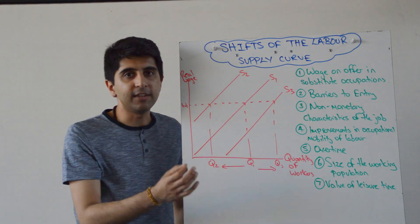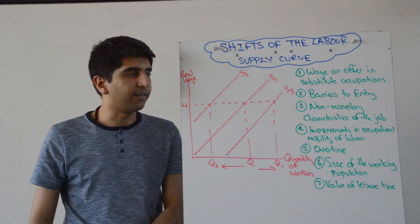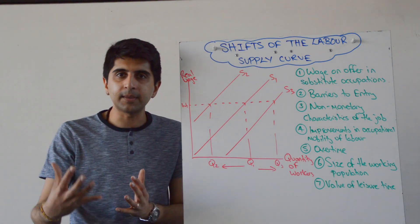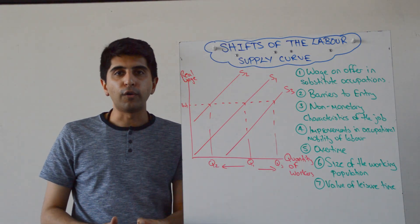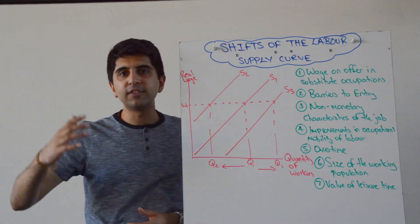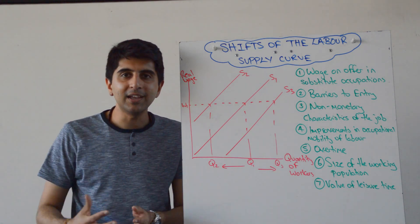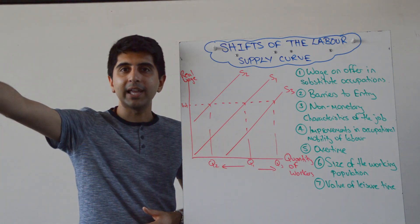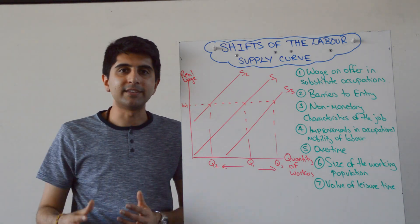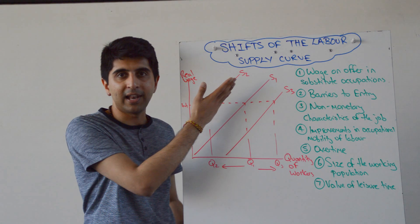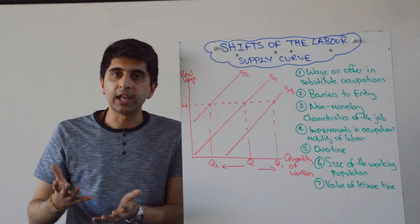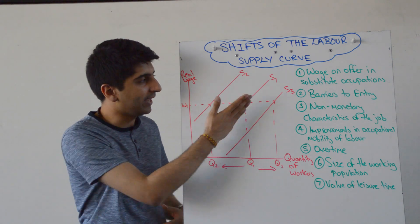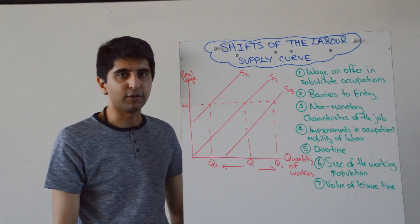So let's look at some of these non-wage determinants of supply of labour. The wage on offer in substitute occupations is a big determinant. If the wage in substitute occupations is really high, a lot of workers will leave this profession and go and work in that other profession where wages are higher, shifting the supply curve to the left. Whereas if wages in this profession are really high, it attracts new workers, thus increasing supply and shifting it to the right.